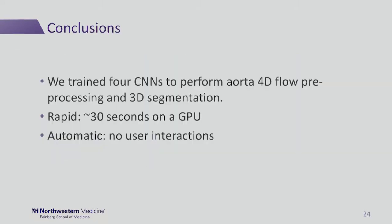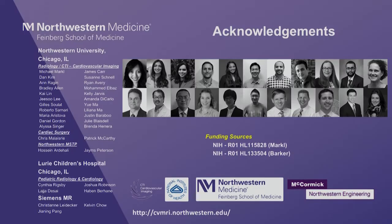In conclusion, we trained four separate convolutional neural networks to perform aortic 4D flow pre-processing and 3D segmentation. It's a rapid implementation, taking about 30 seconds on a computer with a GPU, and it's fully automatic, requiring no user interaction once you've started the pipeline. Thanks for your attention, and I'd like to acknowledge all the help I've gotten at Northwestern.